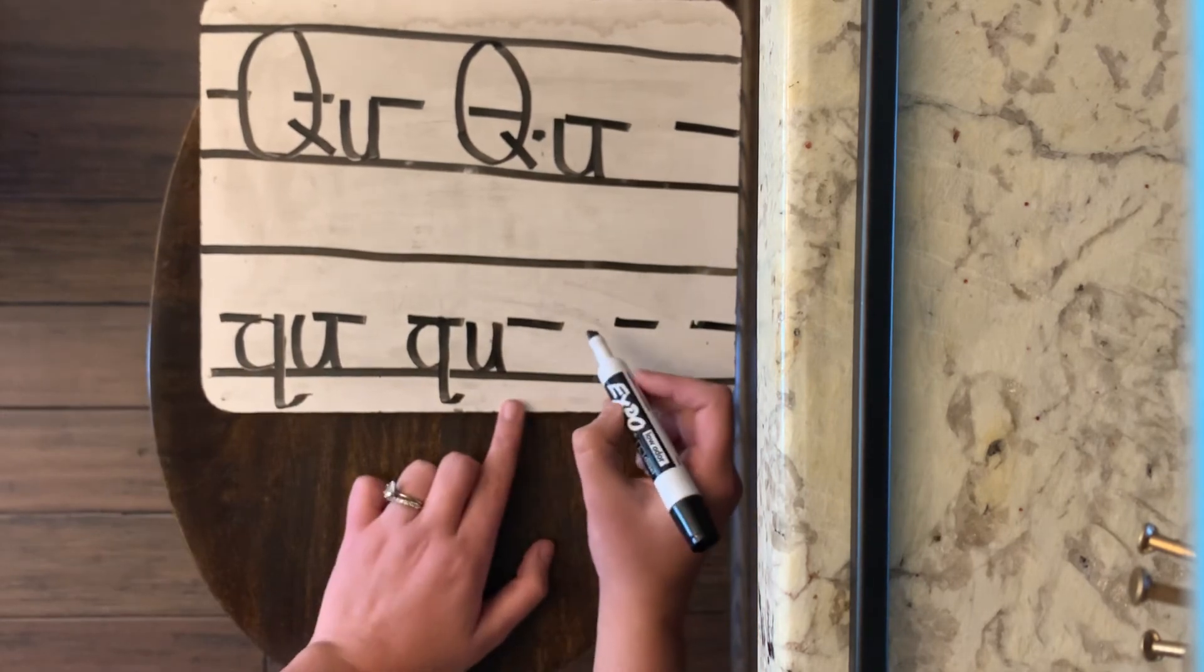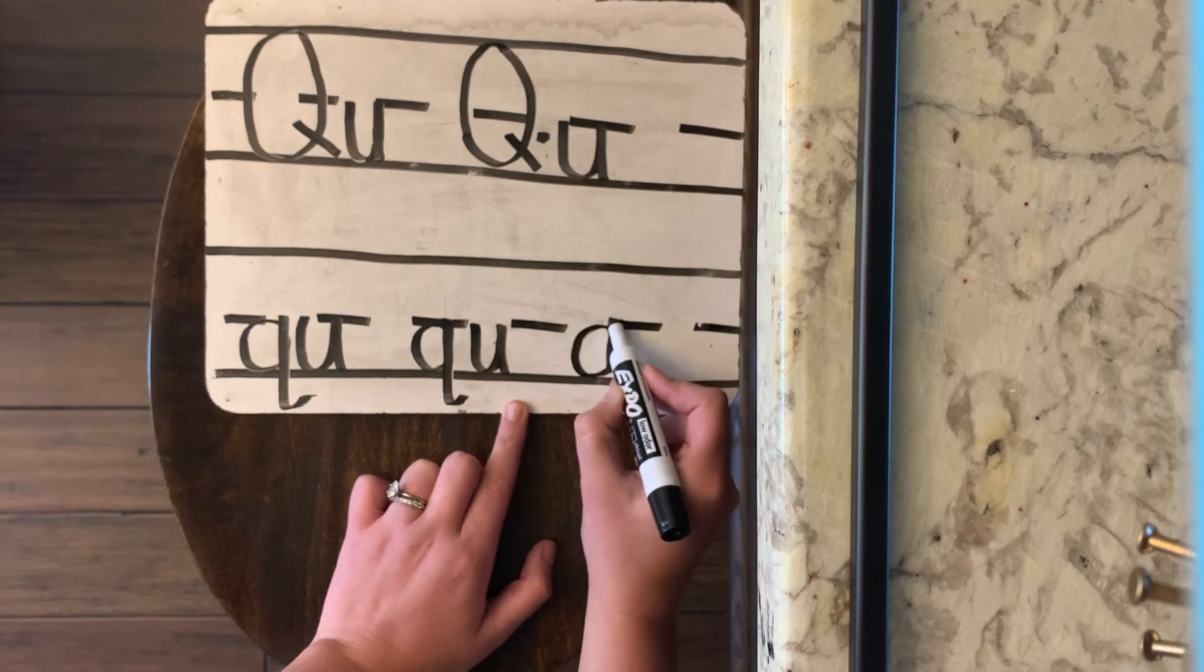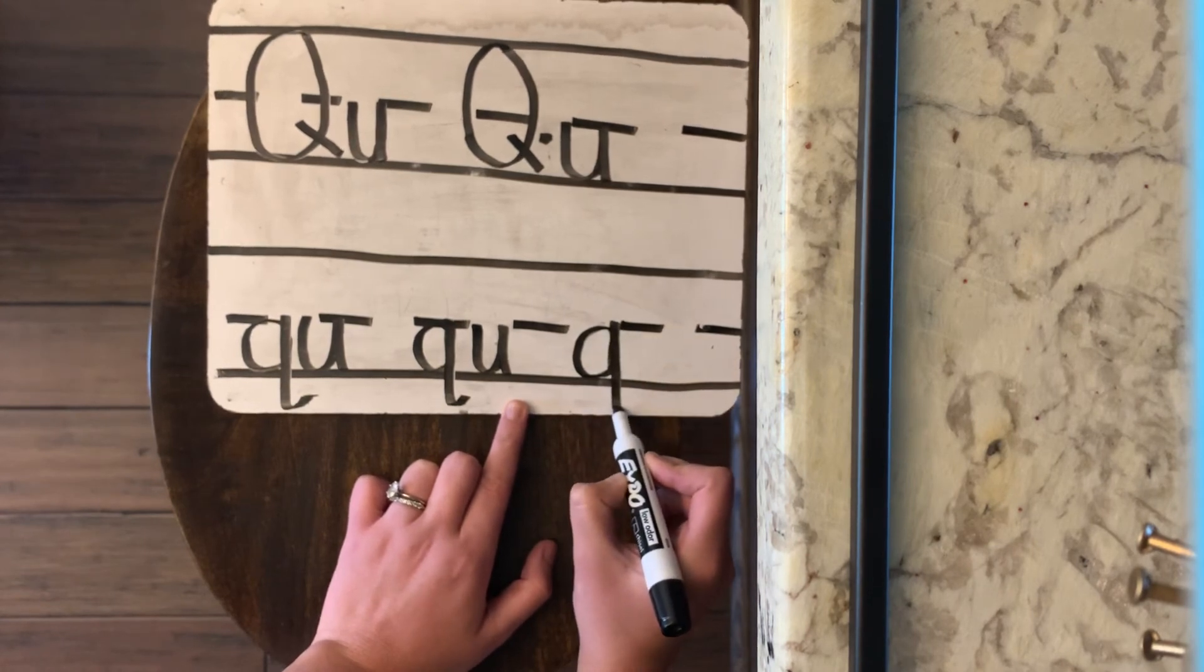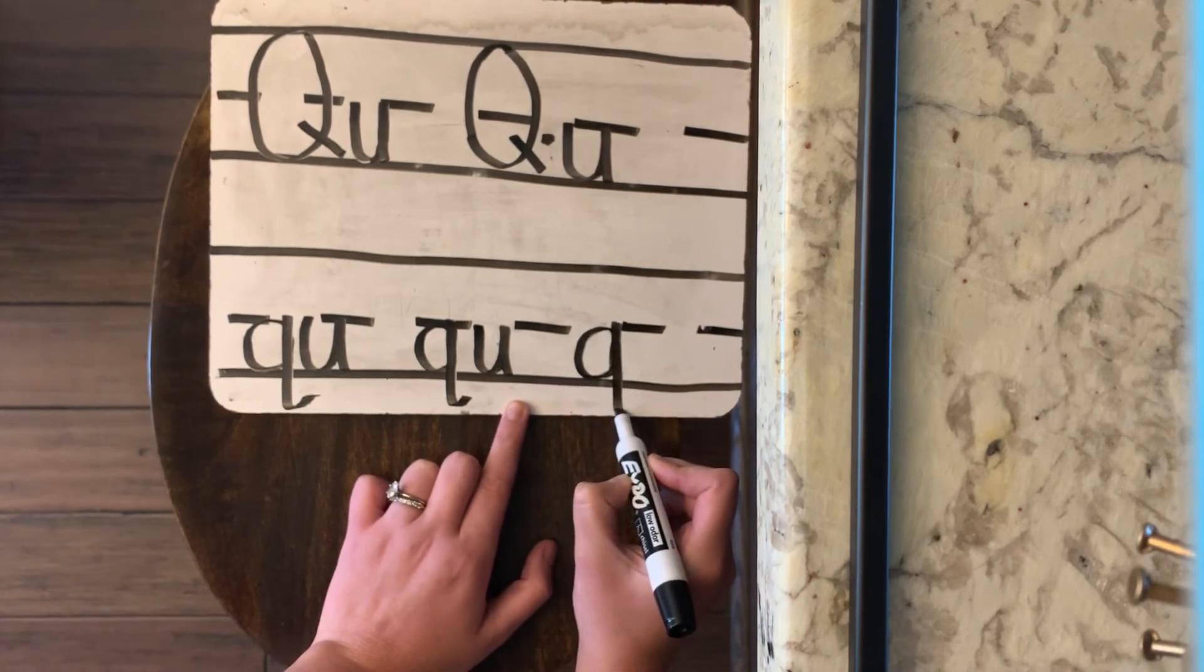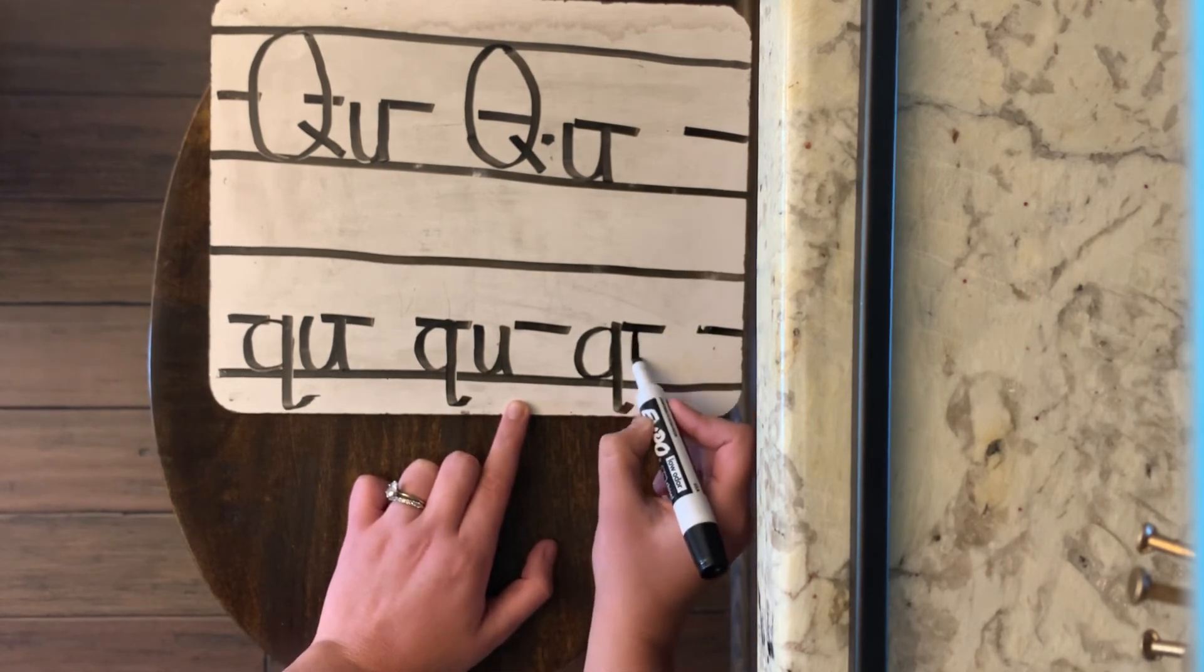I'm going to do one more here just for practice. Okay? Magic C, up like a helicopter, down, past that black line, and backwards. And I'm going to do that U.